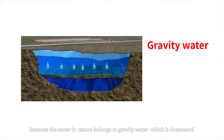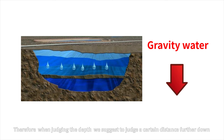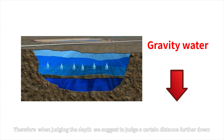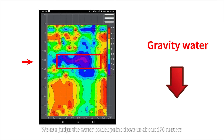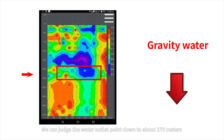Because the water in nature belongs to gravity water, which is downward, therefore, when judging the depth, we suggest to judge a certain distance further down. For example, in this figure, the exact point is 130 meters. We can judge the water outlet point down to about 170 meters.